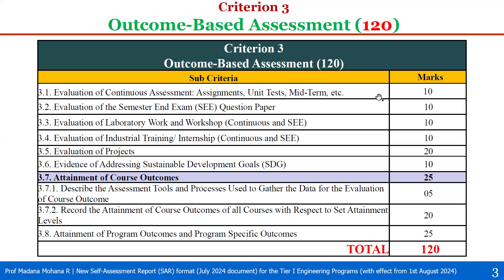The total weightage of Criterion 3 is 120. Here you can observe one point: in Criterion 1 and 2, we covered all these components. Now the evaluation part is given specifically in Criterion 3, that is outcome-based assessment, with respect to internal assessment, external assessment, laboratory assessment, industrial training and internship assessment, project assessment, and outcomes attainment. The evaluation is specifically included in Criterion 3, which is why it is called outcome-based assessment.